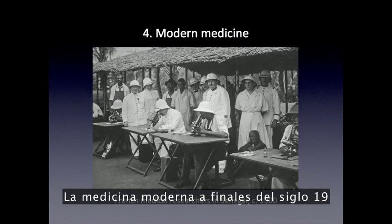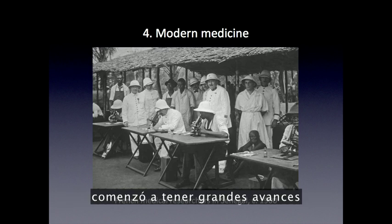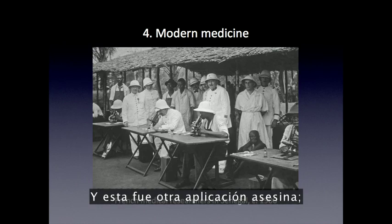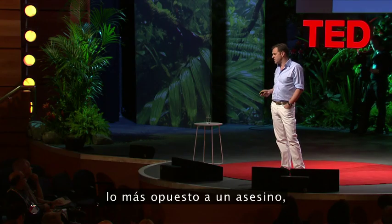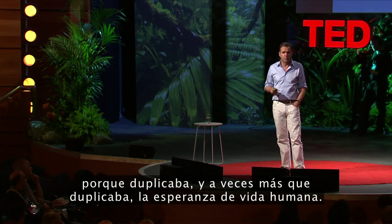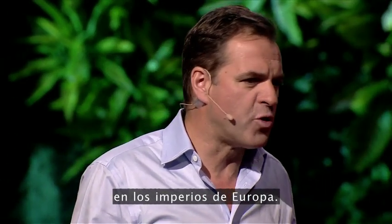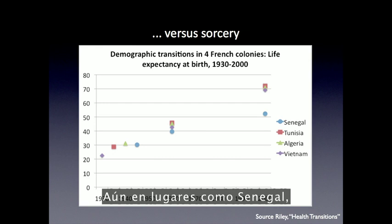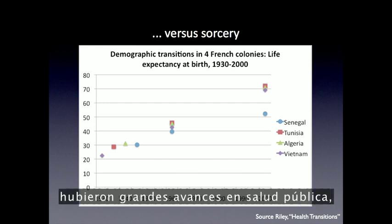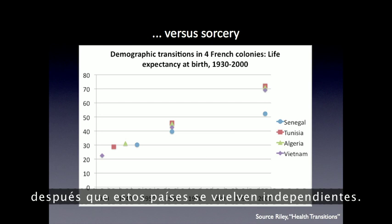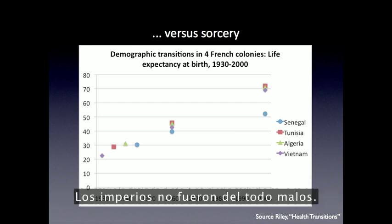Modern medicine in the late 19th century began to make major breakthroughs against the infectious diseases that killed a lot of people. This was another killer app — the very opposite of a killer — because it doubled and then more than doubled human life expectancy. It even did that in the European empires. Even in places like Senegal, beginning in the early 20th century, there were major breakthroughs in public health and life expectancy began to rise. It doesn't rise any faster after these countries become independent. The empires weren't all bad.